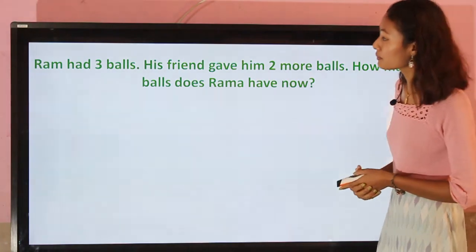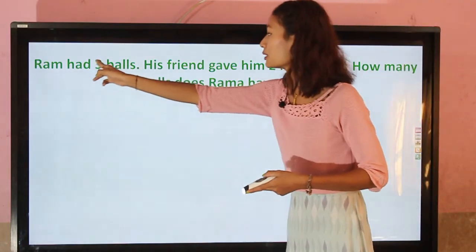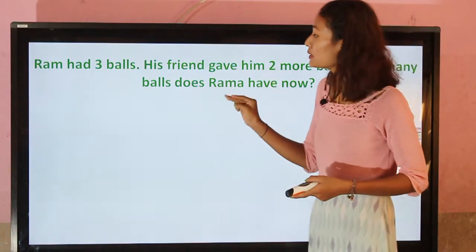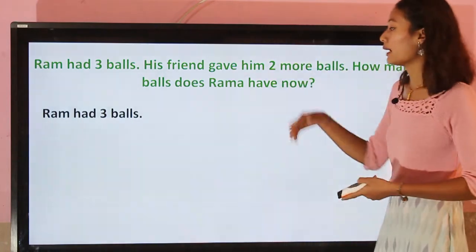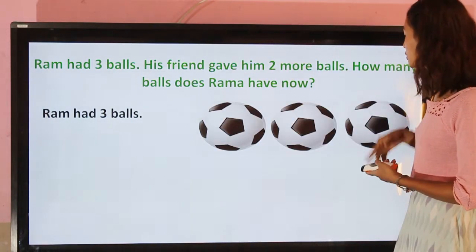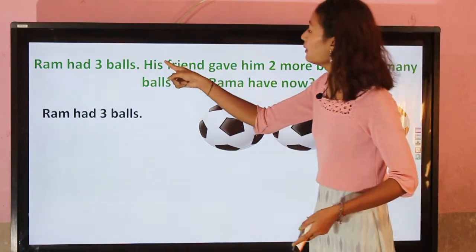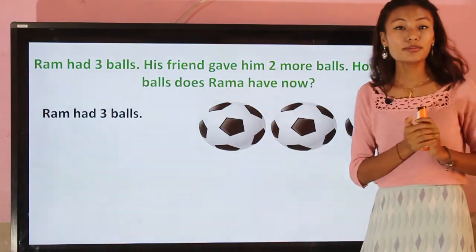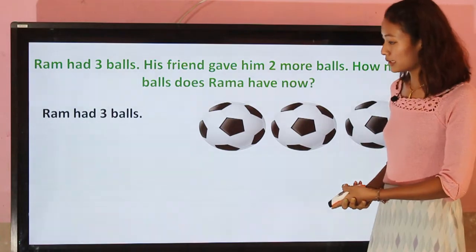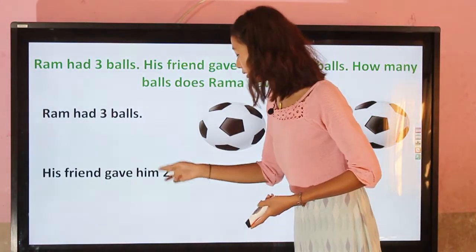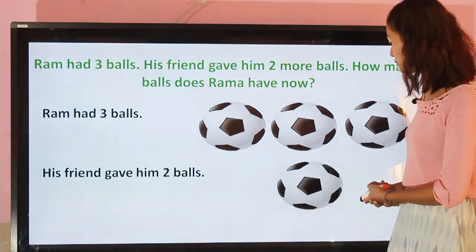Now let's do more exercise. Ram had three birds. Let's draw three: one, two, three. And his friend gave him two more birds. Let's draw two more: one, two.